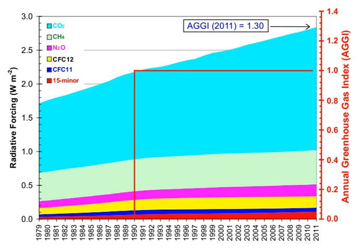Human activities since the beginning of the Industrial Revolution around 1750 have produced a 45% increase in the atmospheric concentration of carbon dioxide (CO2), from 280 ppm in 1750 to 406 ppm in early 2017.